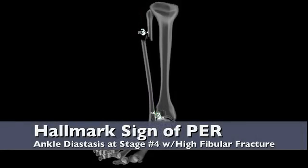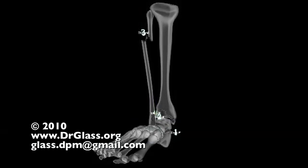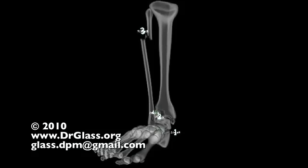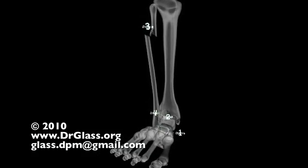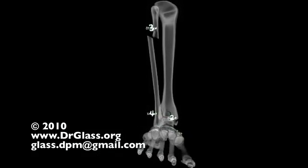The high fibular spiral fracture, also known as Maisonneuve fracture, seen in stage 3 is unique to pronation external rotation injuries.